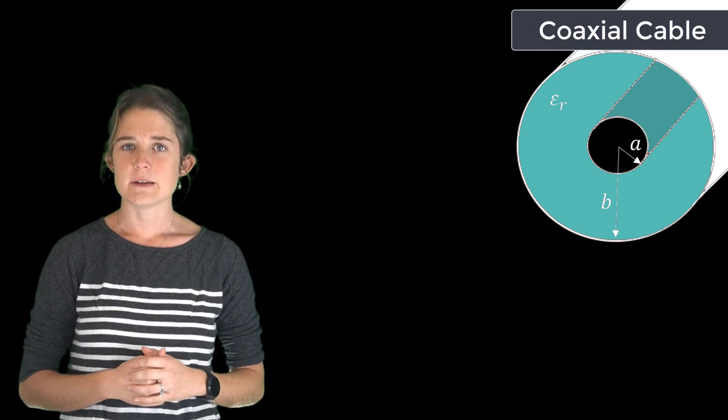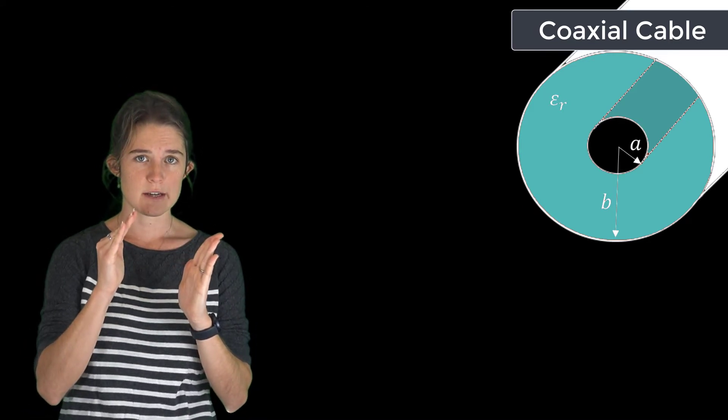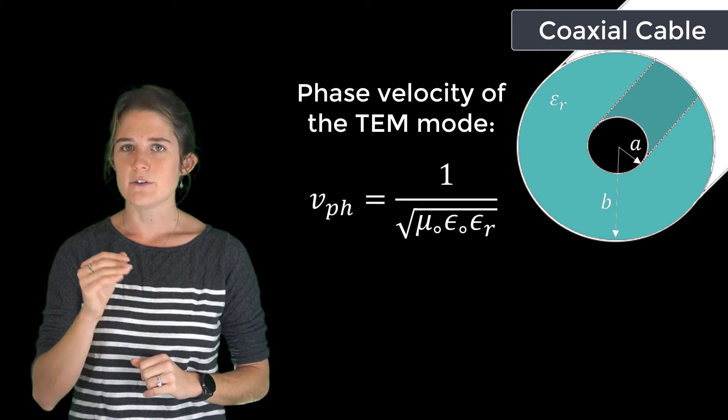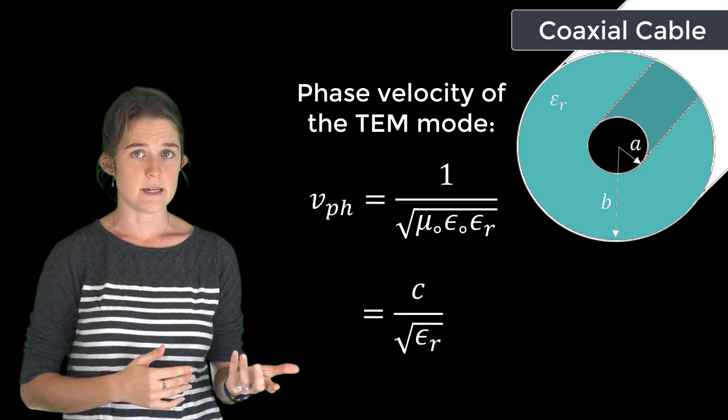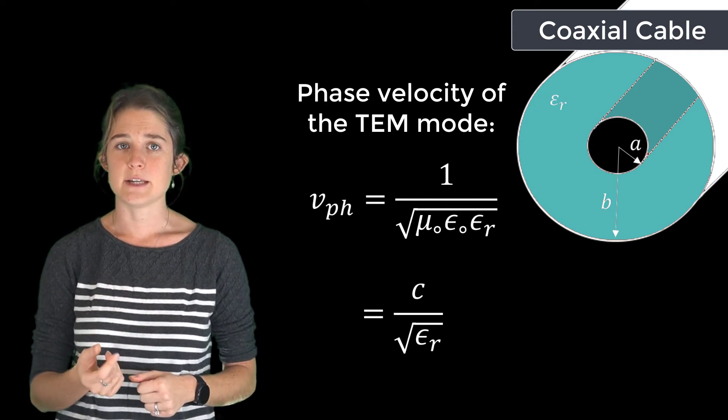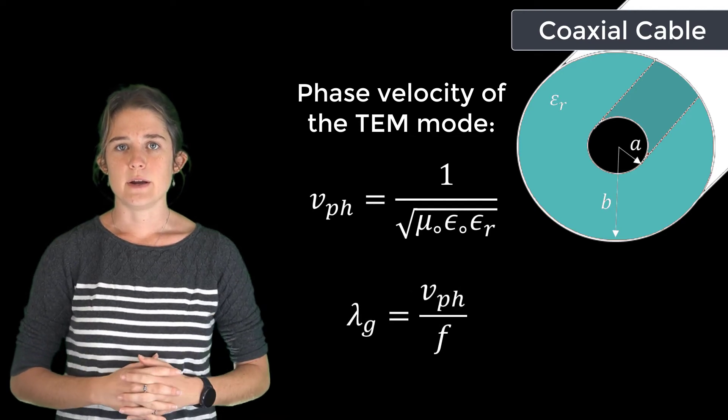Since the dominant wave is TEM and exists entirely within that dielectric, the phase velocity of the guided wave is just 1 over the square root of μ times ε, or c divided by the square root of the relative permittivity of the dielectric. The wavelength of the guided wave is the phase velocity divided by the frequency.